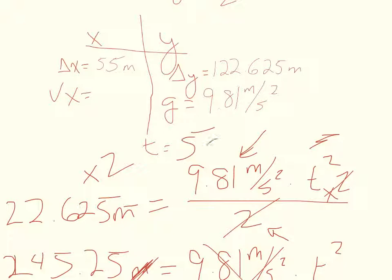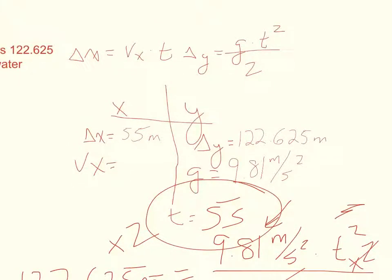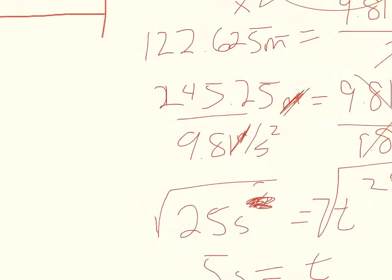5 seconds goes up here. Now we can use this 5 seconds in our Vx equation. We are given our Δx, we don't know Vx, but we do now know time. So I'm going to set up that equation just down below, where 55 meters = Vx × 5 seconds.